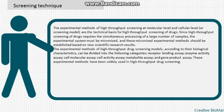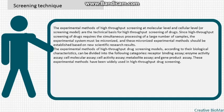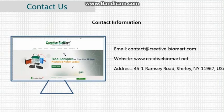The experimental methods of high throughput screening at molecular and cellular levels serve as the technical basis for high throughput drug screening. Since this requires simultaneous processing of large numbers of samples, the experimental system must be miniaturized and based on new scientific research results. The experimental methods can be divided into the following categories: receptor binding assay, enzyme activity assay, cell molecular assay, cell activity assay, metabolite assay, and gene product assay. These methods have been widely used in high throughput drug screening.